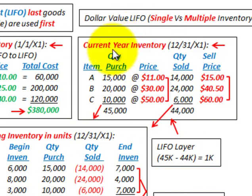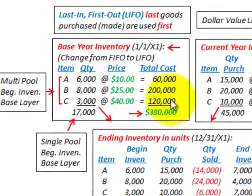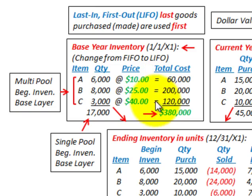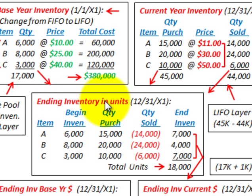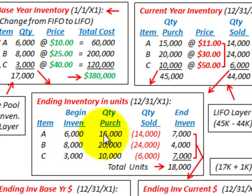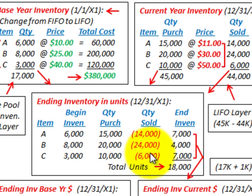Moving to our current year, we have some quantities purchased at a specific price and quantities sold at a specific sales price. In either case, we have to come up with some ending inventory in units — the number of units we have in ending inventory — and we do that for both single pooling and multiple pooling. For each item, we take beginning inventory plus quantity purchased less quantity sold to get an ending inventory amount, doing that for each product class: A, B, and C.